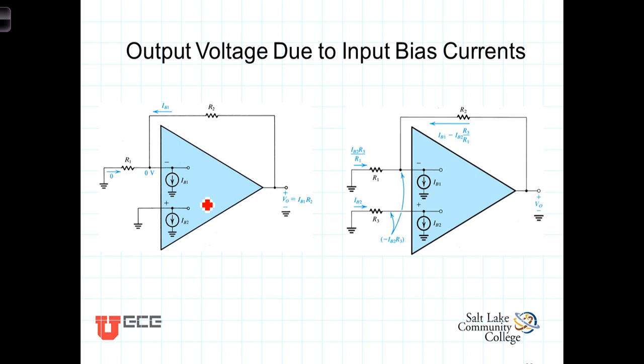Now you'll notice that by shorting the non-inverting terminal to ground, by virtue of the virtual short, that also pulls the inverting terminal to ground. And so there will be no current flowing through R1.